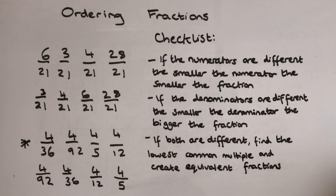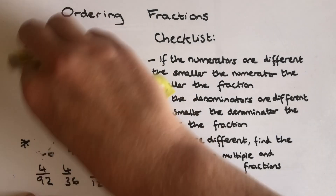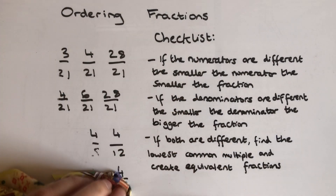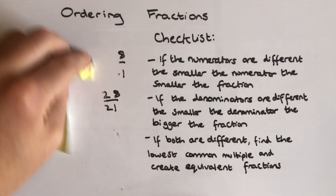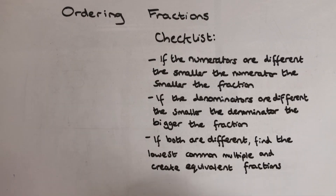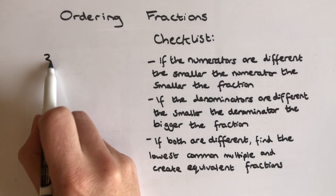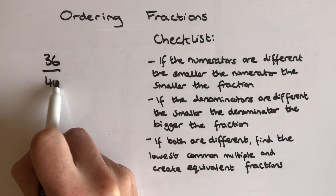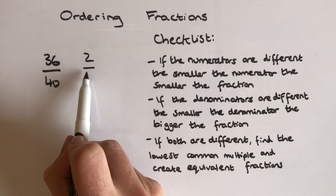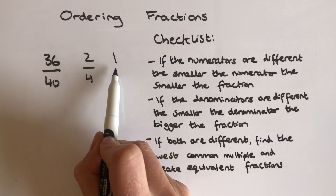The last thing we're going to look at today is if both the numerators and denominators are different — we're going to have to find the lowest common multiple, and then create equivalent fractions before we can order them. So I've got just three fractions for us to try and order now: 36 over 40, 2 over 4, and 1 over 5.